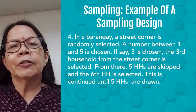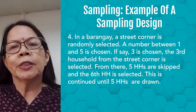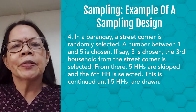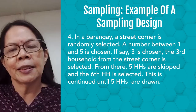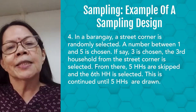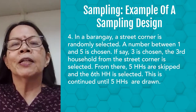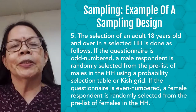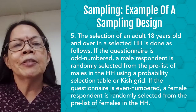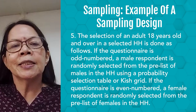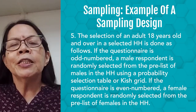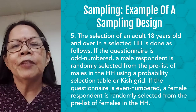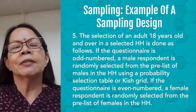In a barangay, a street corner is randomly selected, then a number between one and five is chosen. If, say, three is chosen, the third household from the street corner is selected. From there, five households are skipped and the sixth household is selected; this continues until five households are drawn. The selection of an adult 18 years old and over in a selected household works as follows: if the questionnaire is odd-numbered, a male respondent is randomly selected using a probability selection table or KISH grid; if the questionnaire is even-numbered, a female respondent is randomly selected from the pre-listed female adults in the household.